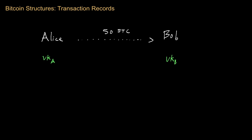These values also correspond to private values. Each person who has a public key will have a corresponding private key associated with it. In this case, we'll call the private key — or the secret key, which is in fact a signing key in this context — SK_A for Alice, and SK_B for Bob. They are going to keep these keys private.